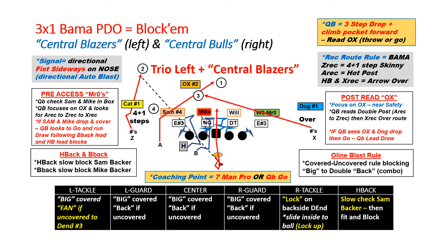We can run this from two by two or three by one. Nothing changes except the H comes from the three-receiver side. He takes two shuffle steps inside, pauses, then goes and blocks the Sam, with the B-back leading up on the mic. The quarterback still takes his three-step drop reading the ox, looking for the double post or the high mesh crosser, then starts to climb the pocket. If it's not there, he turns it into a quarterback lead draw PDO.